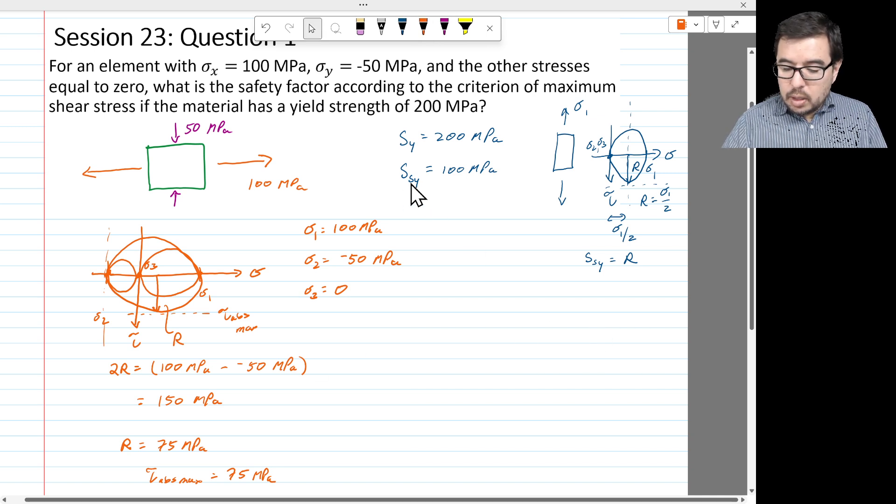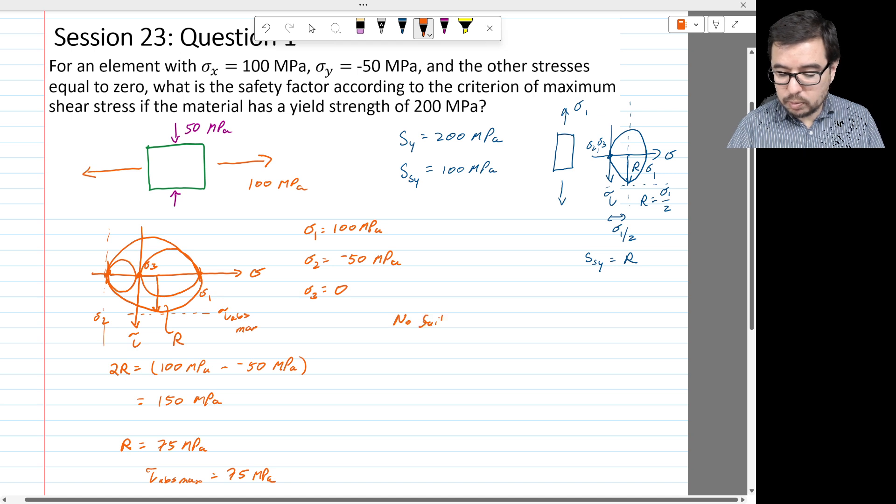What do we calculate for the shear strength of the material? We calculate 100 megapascals. So this then means, first, do we have failure or not? And the answer is no, because tau absolute max is less than the shear strength of the material.